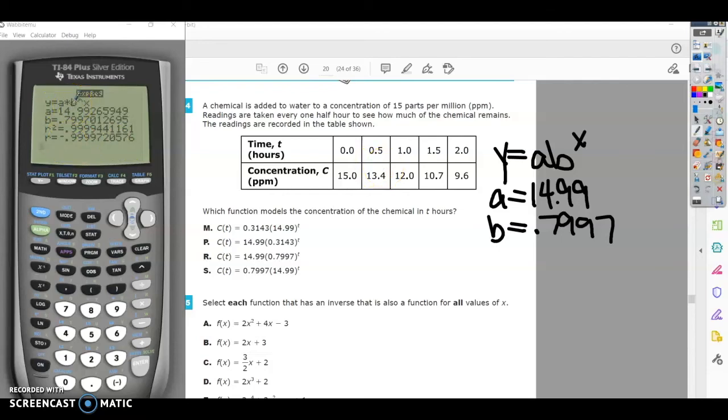So we can determine that if we plug these numbers in, we're going to have y equals 14.99 times 0.7997 raised to the t power. We use C(t) for function notation, so y is the same thing as C(t). If we look at the answer choices, the only one that matches our calculated equation C(t) = 14.99(0.7997)^t is the correct answer.